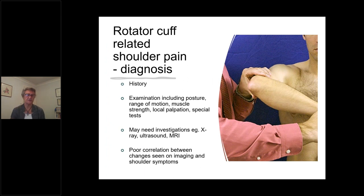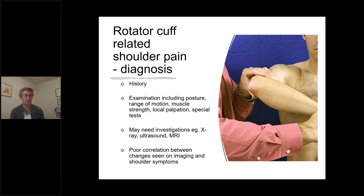For diagnosis, we listen carefully to the patient's history, including past history, trauma, activities, and aggravating factors. We then examine the patient, looking at posture, scapulothoracic movement, how the shoulder blade sits on the chest wall, range of motion, muscle strength, and then perform palpation and special tests. One test involves placing the arm in a provocative position — lifting it away from the body and applying internal rotation — to see if that causes pinching. Investigations such as ultrasound or MRI may be needed when a tear is suspected.